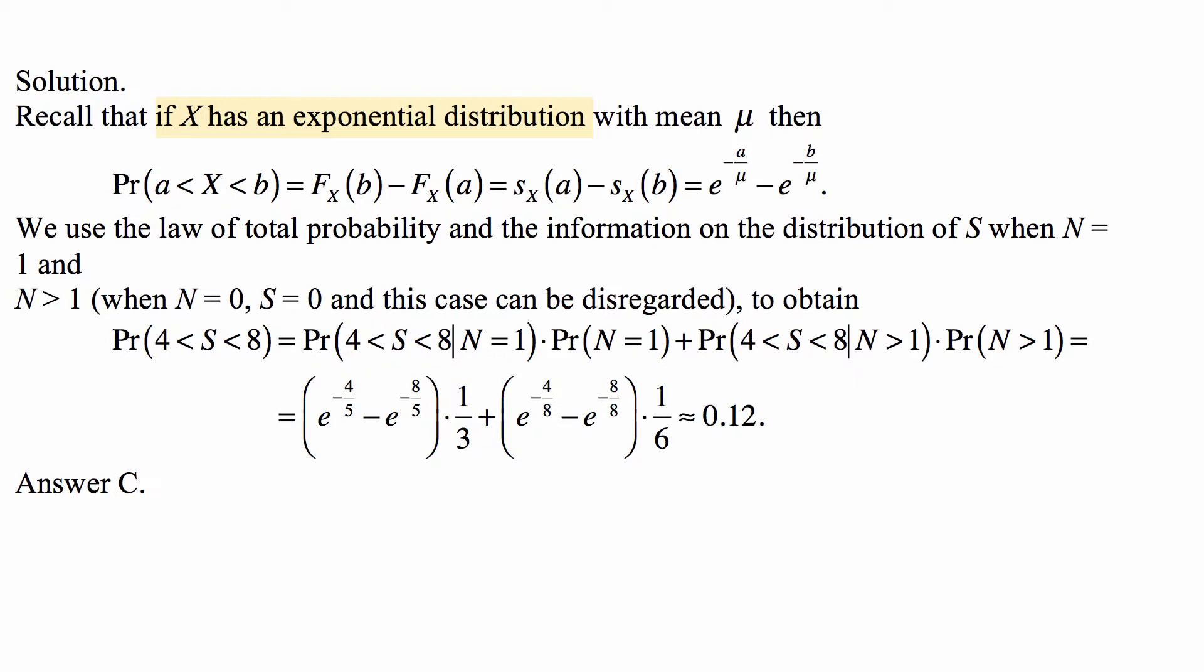Plus the probability that S is between 4 and 8 given that N is more than 1, which is e to the minus 4 over 8 minus e to the minus 8 over 8, and this whole difference is multiplied by 1 sixth, which is the probability that N is more than 1.